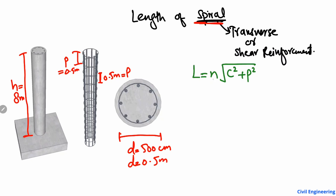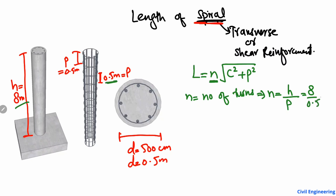First we have to find N. N is basically the number of turns — how many turns are used. It can be found by a simple formula: N is equal to the total height of the column divided by the pitch, which is the distance between two spirals. Height of the column is 8 meters divided by 0.5, so we get 16. So the number of turns N is 16.